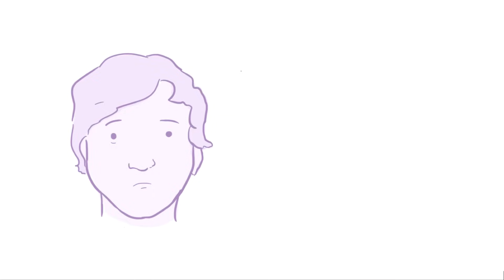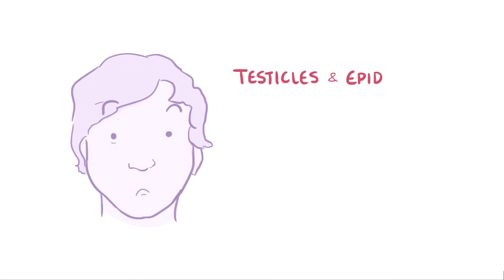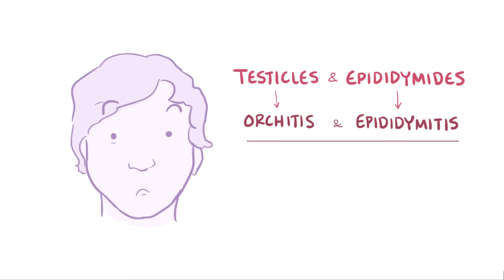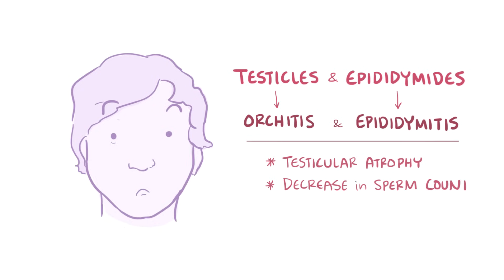In boys, usually adolescents and young men, mumps can infect the testicles and epididymis and cause orchitis and epididymitis, respectively, most often just on one side. This can end up causing testicular atrophy in some men, as well as a decrease in sperm count and sperm motility, but rarely does this cause infertility.